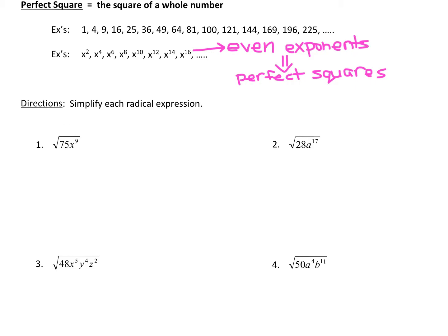I like to break it up into two separate radicals. The first radical is where we're going to put all our perfect squares, and the second radical is where we're going to put everything we're left over with. When you look at the number 75, you want to look at our list and say, what's the biggest perfect square that divides evenly into 75? We can see it's going to be 25. Since 75 divided by 25 is 3, the 3 is going to go in our leftover radical. These two numbers have to multiply together to give us what was under the original radical.